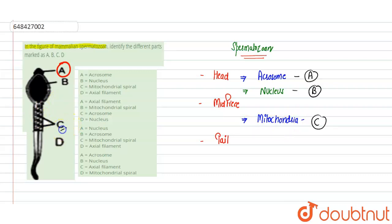So C is the mitochondria. And D, that is present in the tail region, is the axial filament. Axial filament is formed from the distal centriole and they help in the sweep-like movement of the sperm, or we can say the swimming of the sperm.